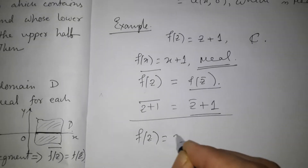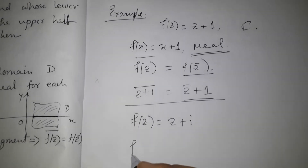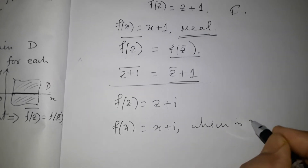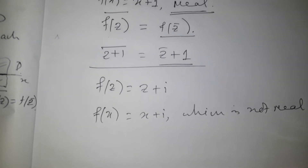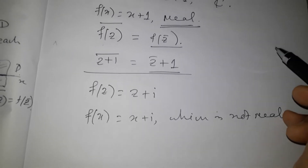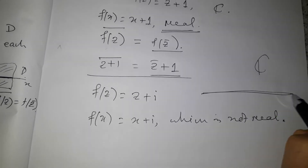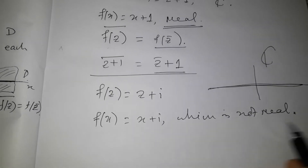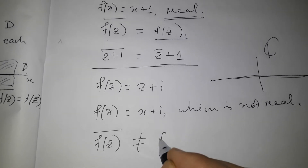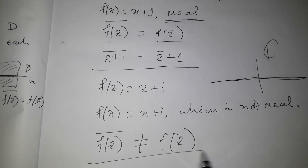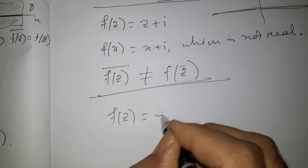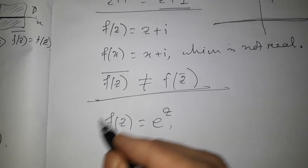On the other hand, suppose f(z) = z + i. Then f(x) = x + i, which is not real for all x on the real line. In this case the domain is all of C, so the line segment is the whole real line. Since f(x) is not real, the condition is not satisfied — and because it is an if-and-only-if condition, the reflection property does not hold.